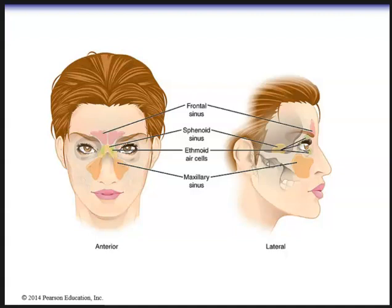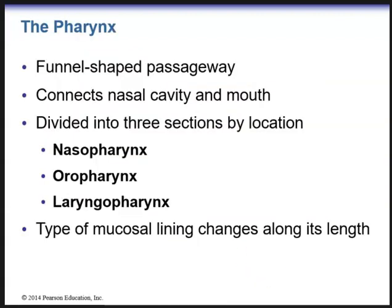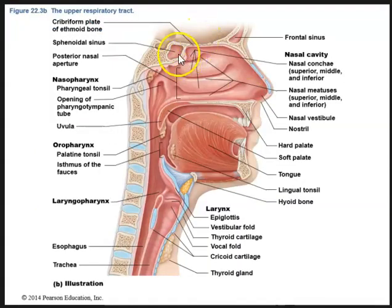Here we see the different paranasal sinuses: the frontal sinus located within the frontal bone; the ethmoid sinuses, also known as ethmoid air cells, within the ethmoid bone; the maxillary sinus on the sides of the nose within the maxillary bone; and then the sphenoid sinus located posteriorly — most often seen just posterior to the superior nasal concha. Going back to the sagittal picture, we can also see the frontal sinus here, located within the frontal bone.